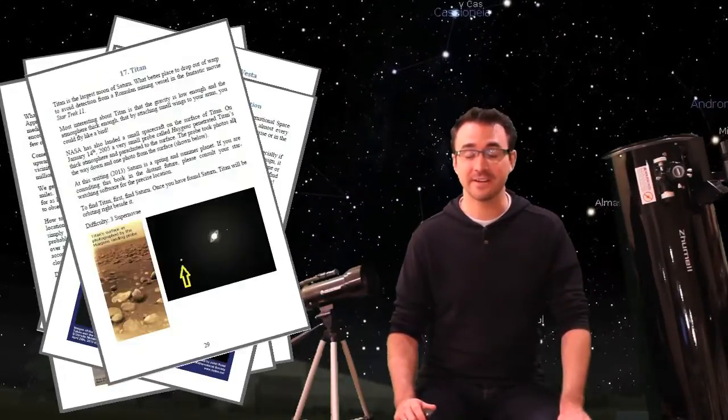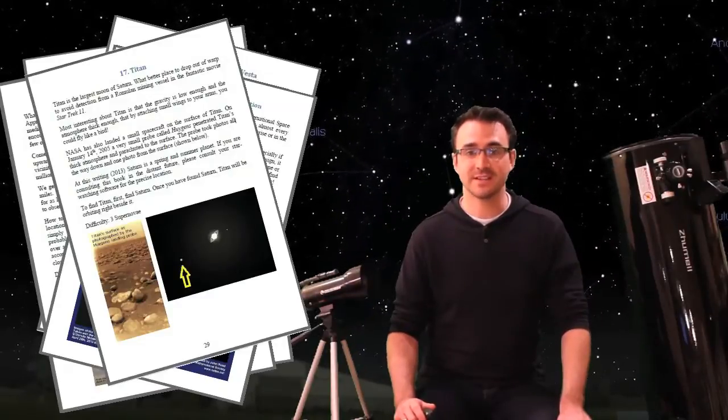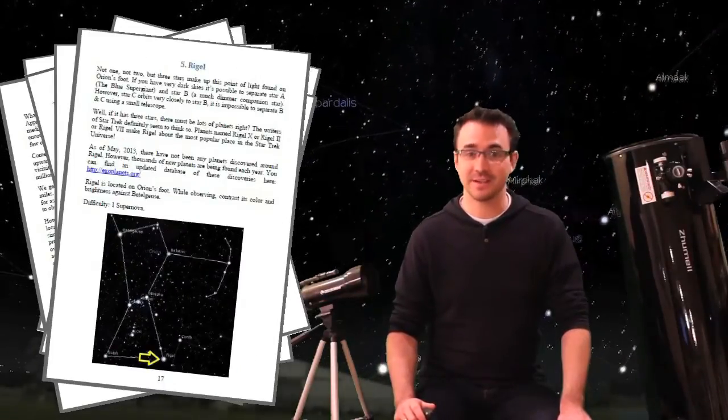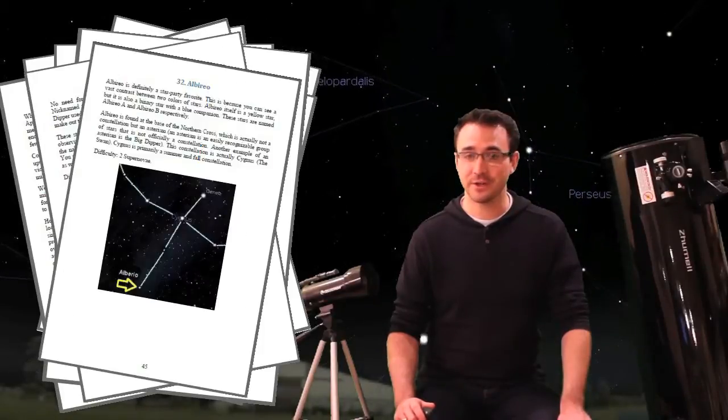We'll also look at Saturn and its moon Titan, red stars like Betelgeuse and blue stars like Rigel, double stars like Mizar, Alberio, and Polaris.